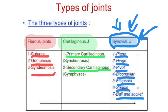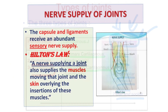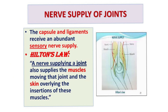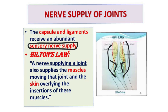Before we explain the types of joints in detail, there is a very important topic to focus on: the nerve supply of joints. Most joints in the human body are covered with a capsule surrounding the whole joint, with ligaments inside the capsule that keep the bones fixed and stable during movement. The capsule and ligaments receive an abundant sensory nerve supply.